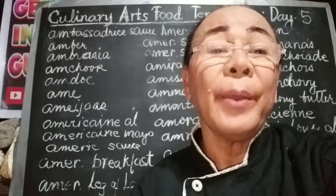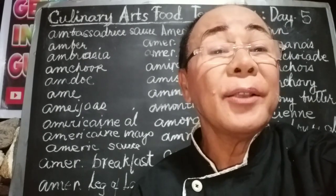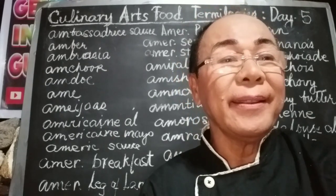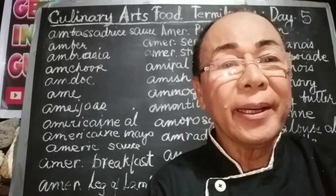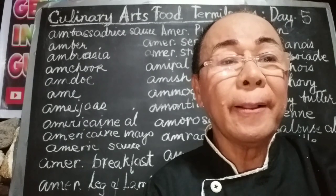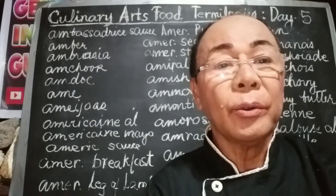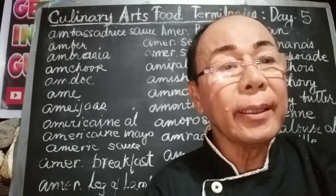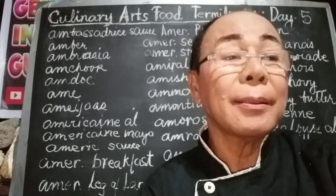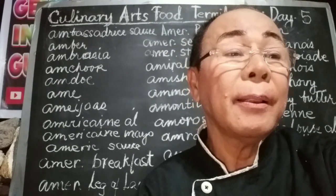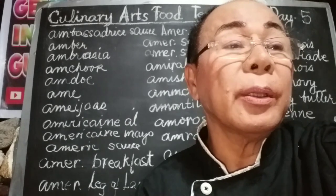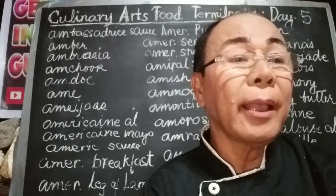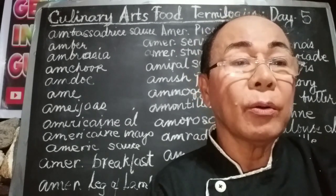Andalusian refers to a French preparation method associated with the cuisine of Spain's Andalusia region, garnished with tomatoes, peppers, rice, eggplant, and sometimes chipolata sausages.